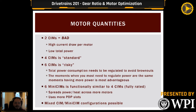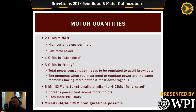Four CIMs has been the standard — it's what the kitbot comes with, and it's what most COTS gearboxes are implemented for with two motor inputs per side. You can get good performance out of it. Six CIMs is on the riskier, higher side for total power consumption reasons. It can give some advantage but don't do it just for the sake of it — make sure you're taking steps to mitigate high current and voltage draw scenarios.